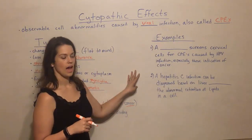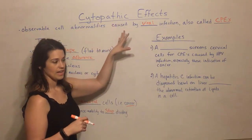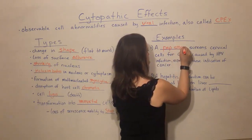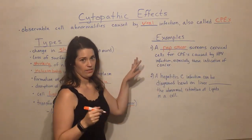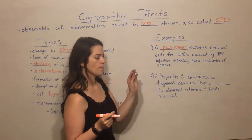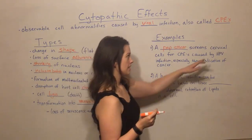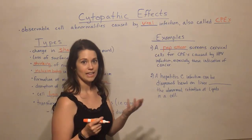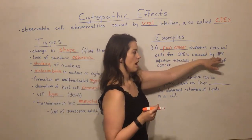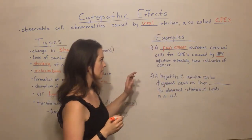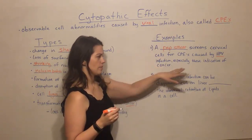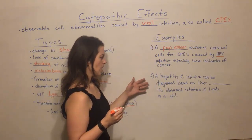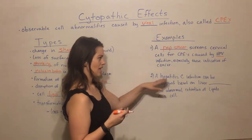Now let's talk about some examples of doctors using cytopathic effects as a diagnostic tool. A really common one you've probably heard of is a Pap smear. Once young women reach a certain age, it's recommended they get a Pap smear every year. A doctor collects a sample from the woman's cervix to get cervical cells, and those cells are viewed under a microscope and assessed for different kinds of CPEs — specifically those caused by HPV infection, human papillomavirus — especially those indicative of cancer, since HPV is well known for causing cervical cancer.